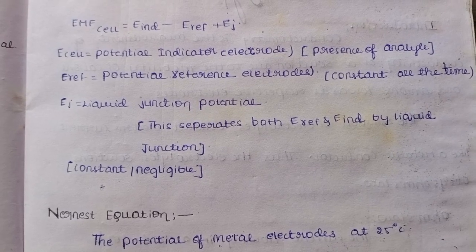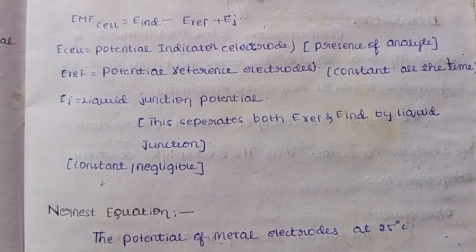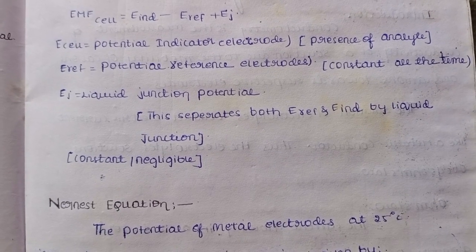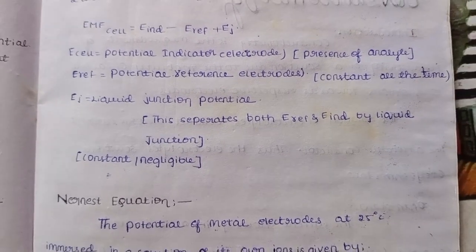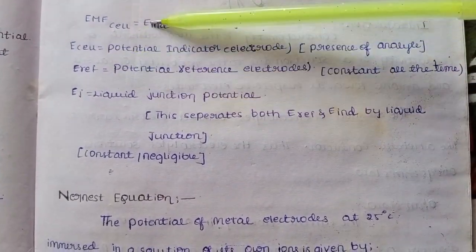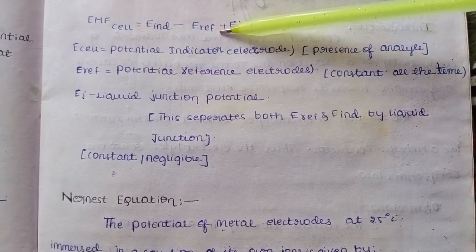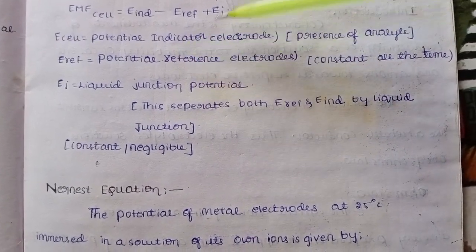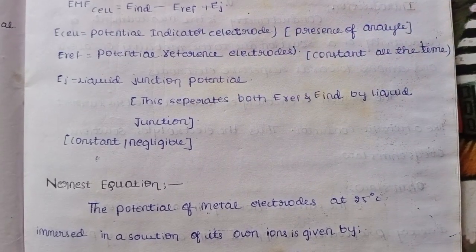E indicator is the potential of indicator electrode, and E reference is the potential of reference electrode. E cell is E indicator and E reference - the potential of reference electrode.